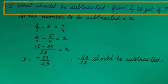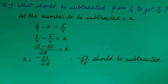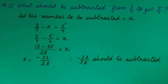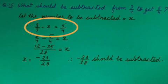Question number 15. What should be subtracted from 3 upon 7 to get 5 upon 4? Because number to be subtracted is not given, so we will let it as x. And when we arrange the given information, it will be 3 upon 7 minus x equal to 5 upon 4.